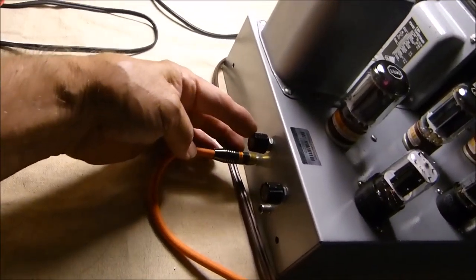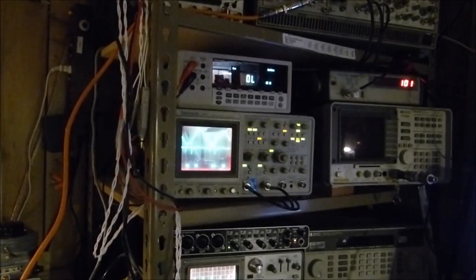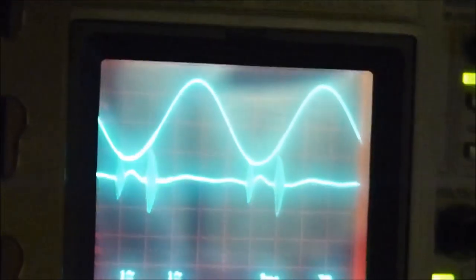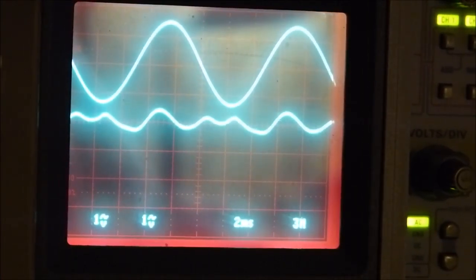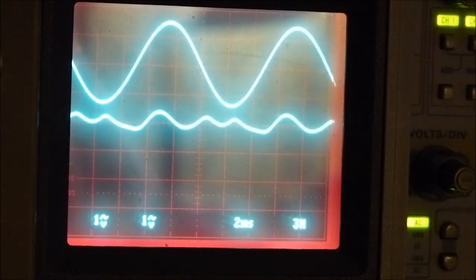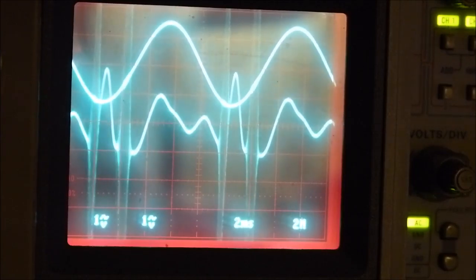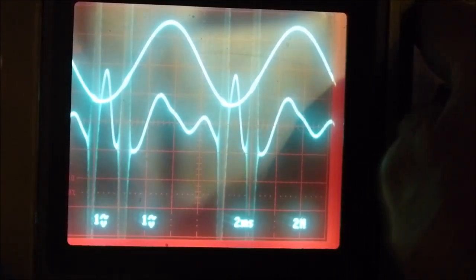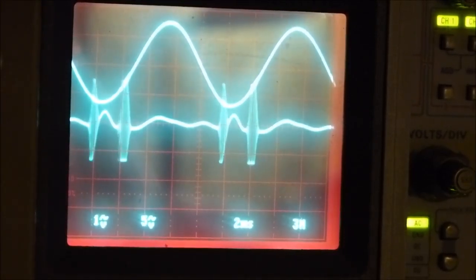All I'm going to do right now is vary these little input pots right here. This is the left channel. I've got two input gain pots here, left channel, right channel. I'm going to vary this right here. It's up all the way right now. Let's go back to the oscilloscope and look at this. These are not simple problems to solve.